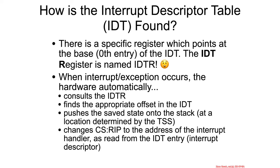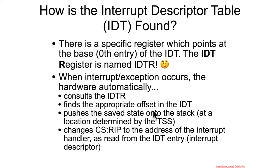Let's start digging into how interrupts work by digging into the interrupt descriptor table. Just like we dealt with the global descriptor table before, we're going to look at the table overall before we look at the entries. So how is the IDT found? It turns out there's an IDT register named IDTR. When an interrupt occurs, the hardware automatically consults the IDTR, and from there it finds the IDT itself. Then it's going to look for an offset in the IDT — a particular index inside of it for a particular interrupt.